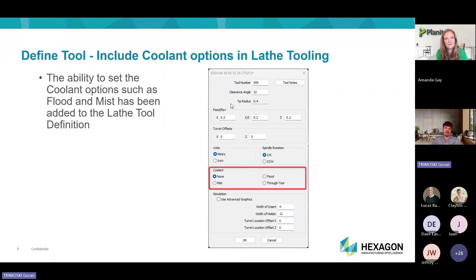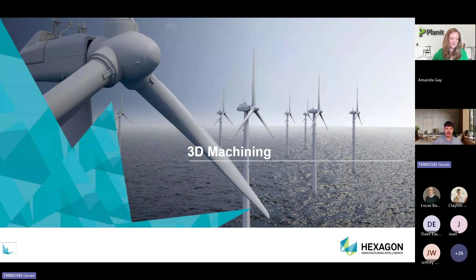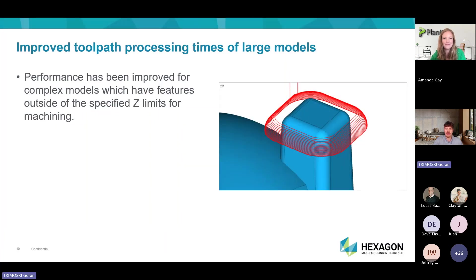Those are some minor changes with the lathe. Now we move on to the bulk of it — 3D machining. With 3D machining, the changes are mainly on AlphaCam's interface end, not really on the customer's side. We have improved the performance of 3D machining for more difficult models, reducing processing time so we don't have to wait as long for an operation to show up on our part.